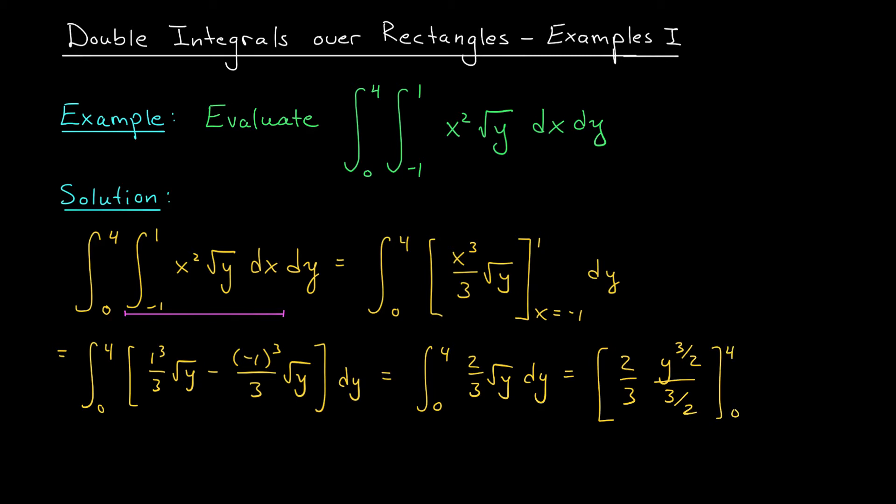I can actually clean up my coefficient here by flipping this bottom fraction up and multiplying. I get 4 ninths, and now I'm going to substitute in my two bounds. 4 to the 3 halves minus 0 to the 3 halves. That gives me a final answer of 32 over 9.